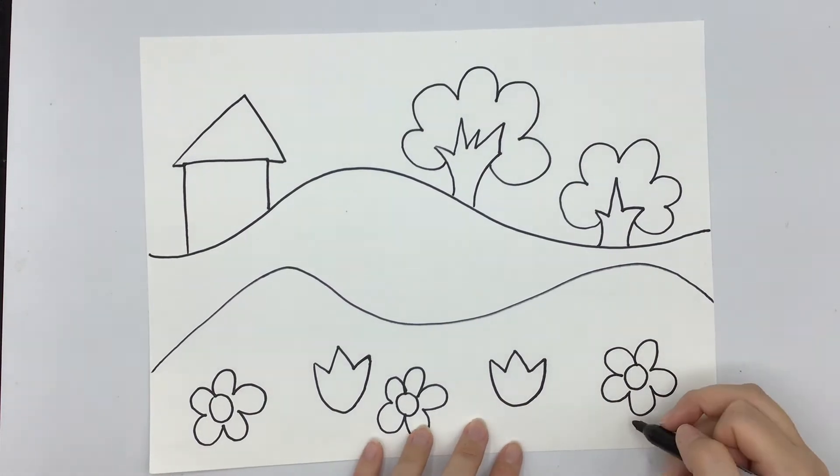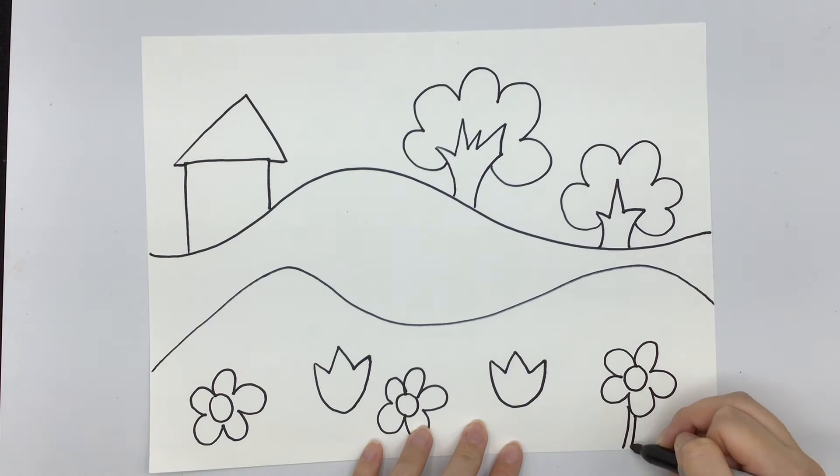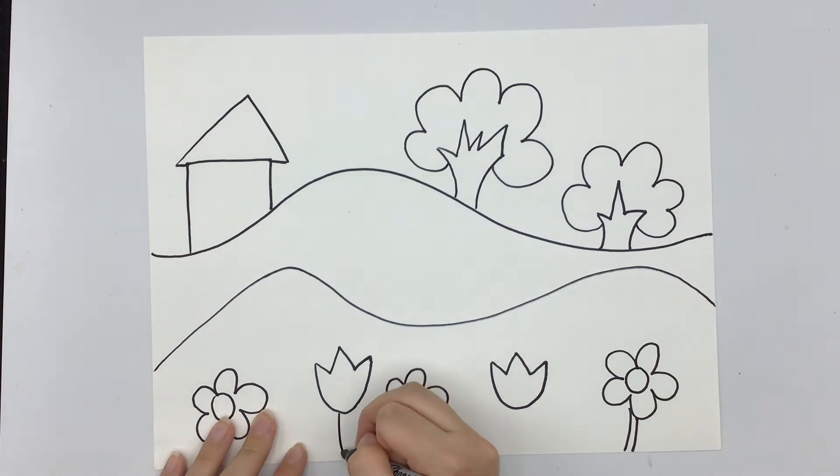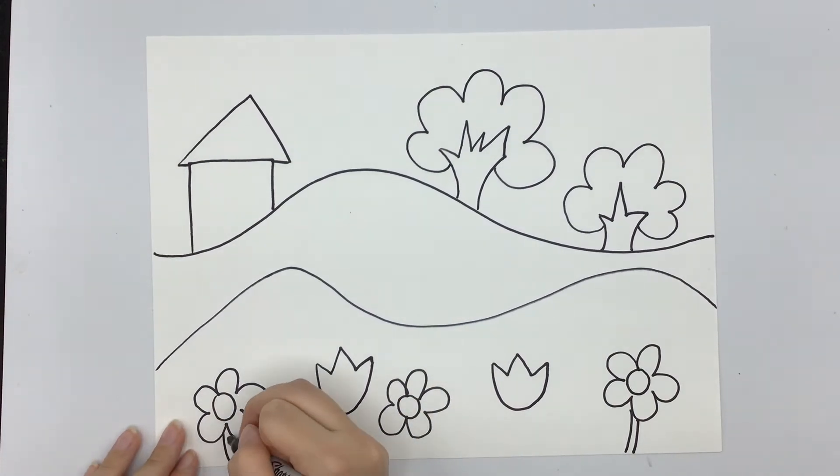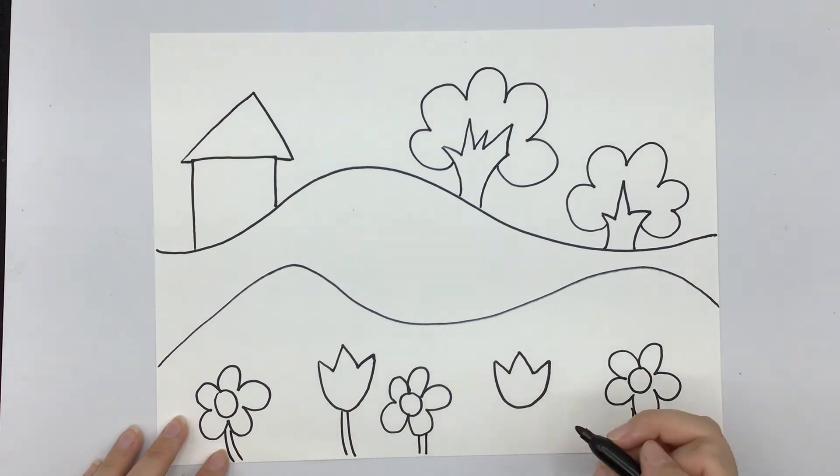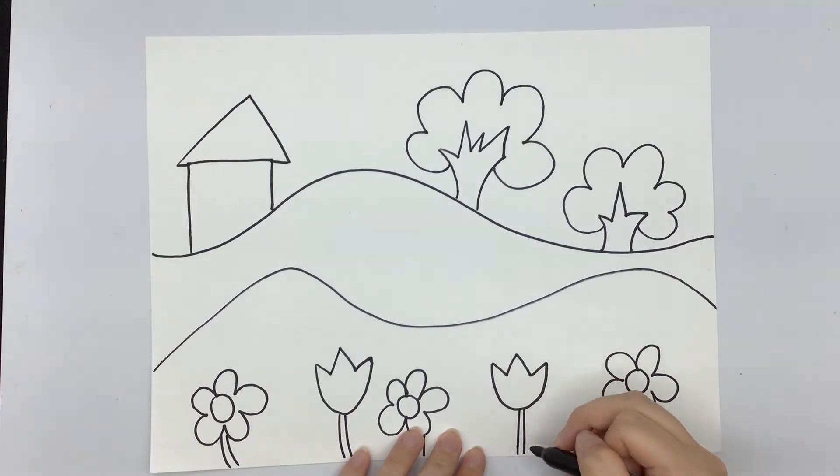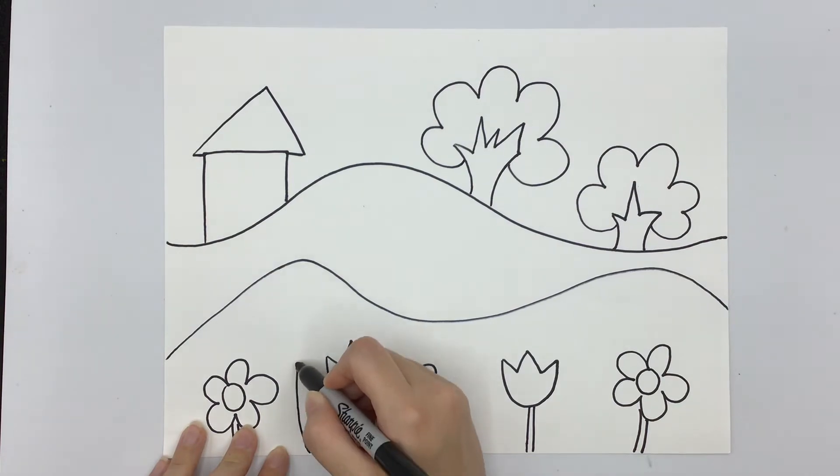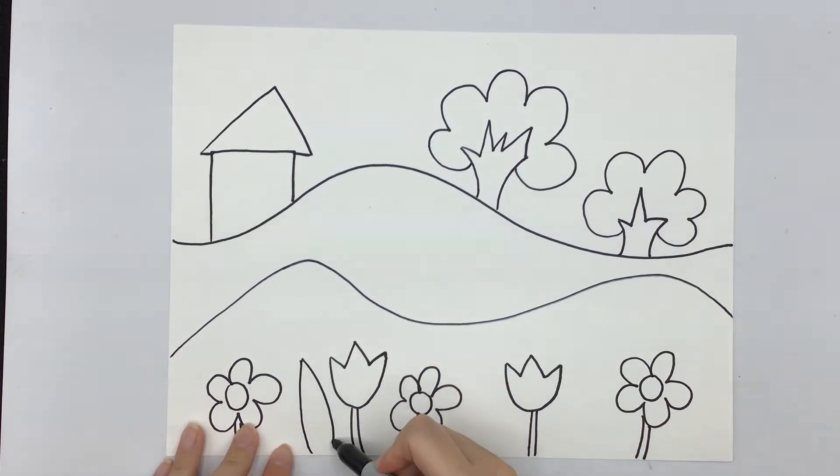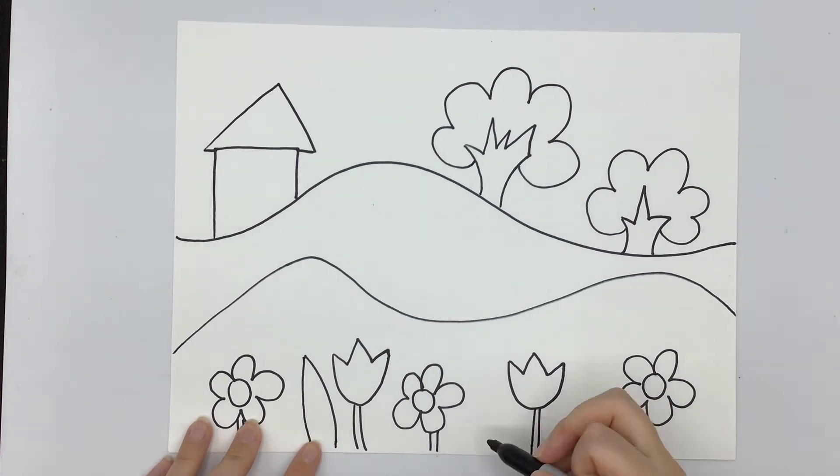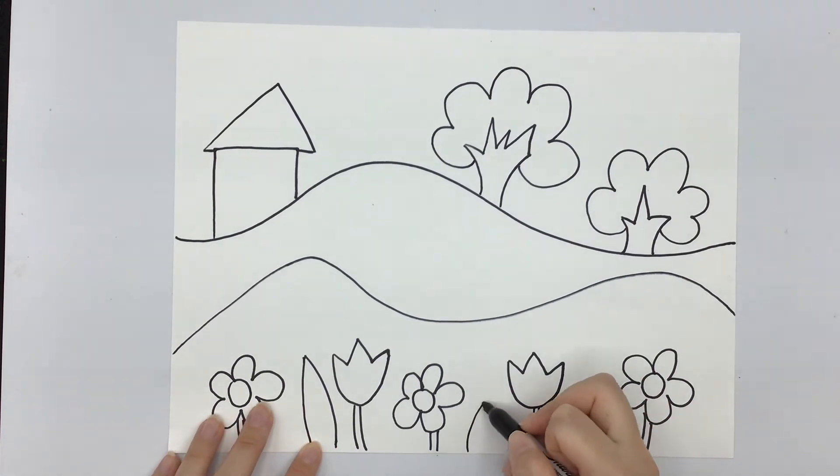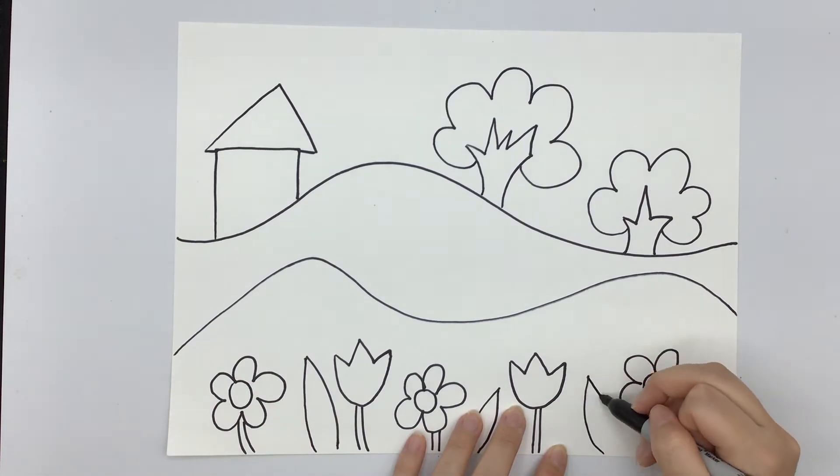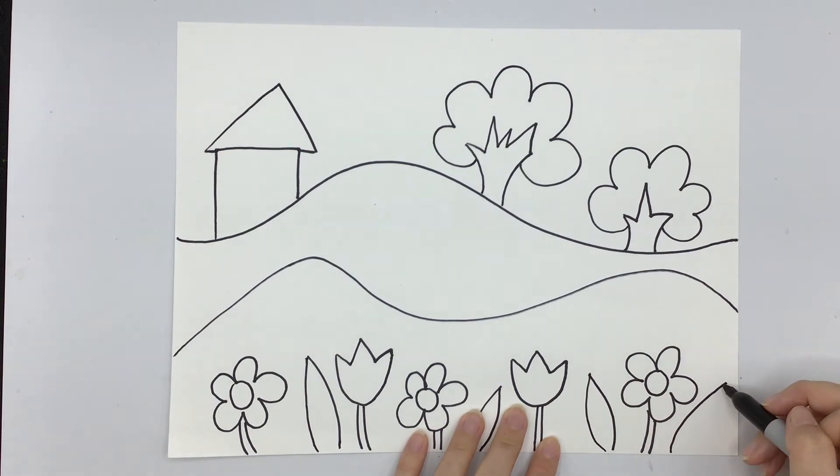After I've drawn some flowers, then I like to add some stems and leaves. For stems I just add two lines coming down from my flowers. And for leaves I just like to make two curved lines that come up and back down, two kind of curvy lines. Up and back down. Up and back down. Up and back down.